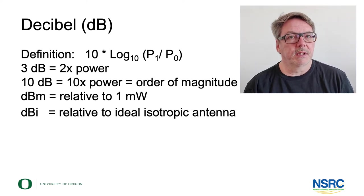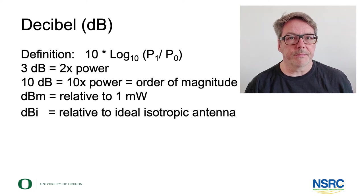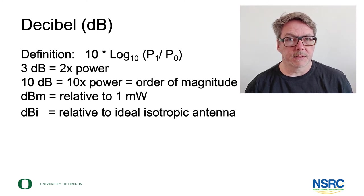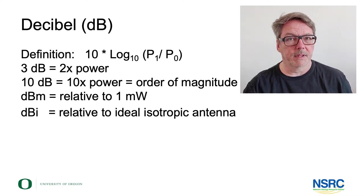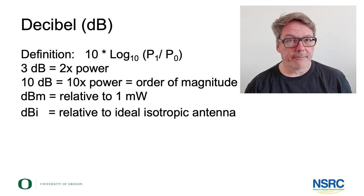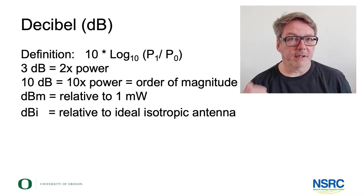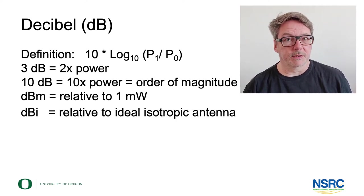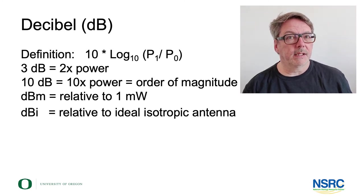You also find dBs that are relative to something else. For example, the dBm is a dB relative to the milliwatt — one milliwatt defines zero dBm. Ten milliwatt would be 10 dBm. 100 milliwatt, a number you often find in Wi-Fi as the upper limit, is 20 dBm.